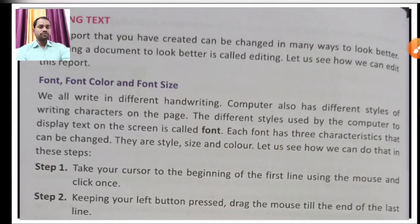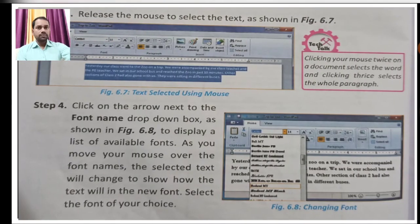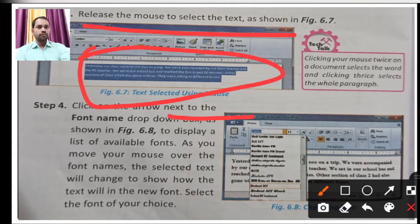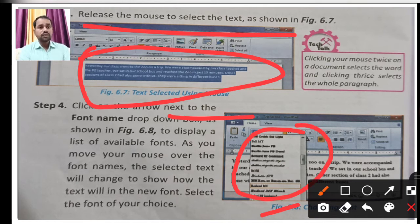Keep the left mouse button pressed and drag to the last line you want to select. Then release the mouse to select the text as shown. Click on the arrow next to the font name drop-down box as shown in figure 6.8. From here you can choose different handwriting styles, and you can make changes to your text document.